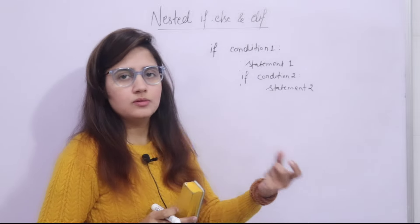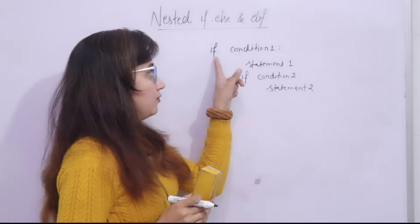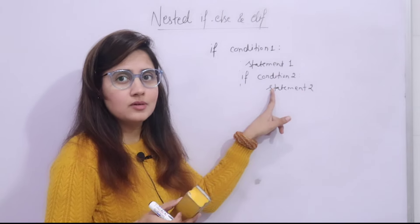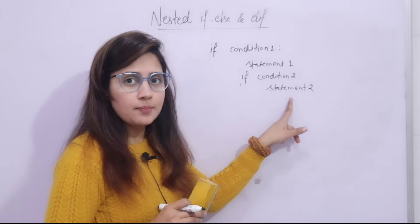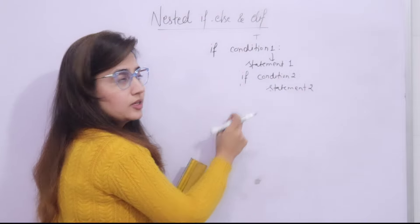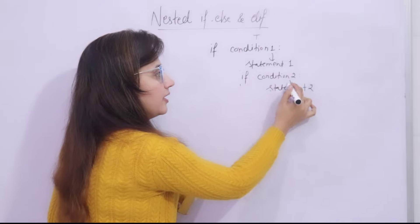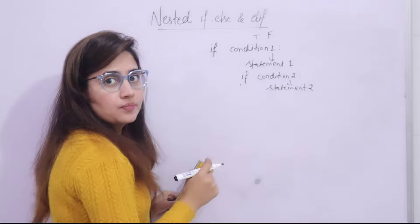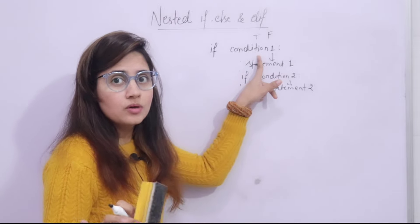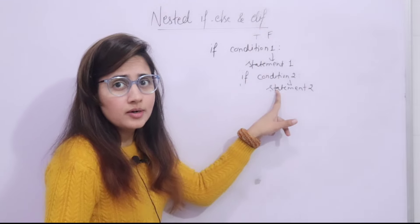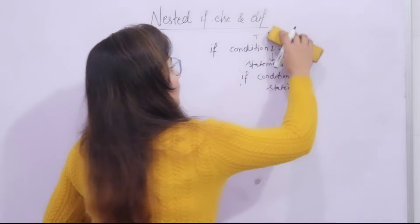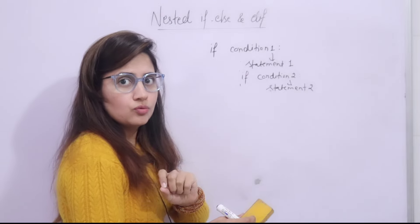A real-life example of nested if: if your mom asks whether you're going to the supermarket and you say yes, then she gives another condition — if apples are available, buy apples. So this inner condition is only checked when the first condition is true. If you say no to going to the supermarket, the second condition about apples is never checked at all.